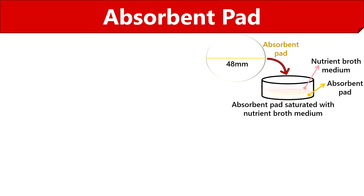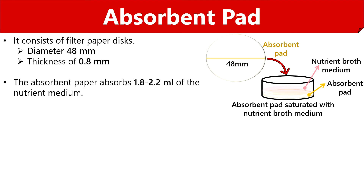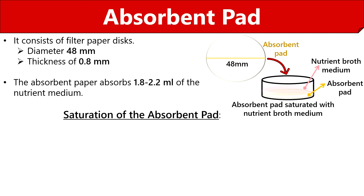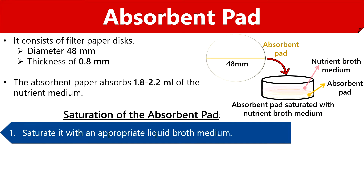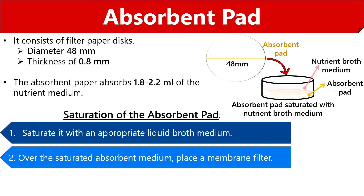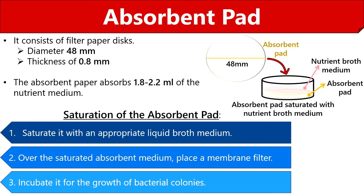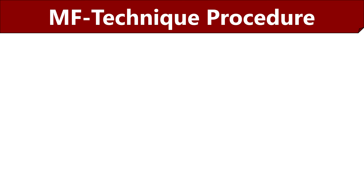After the separation of bacteria over the membrane filter, we need to prepare a special plate for which we need an absorbent paper. The absorbent paper is a filter paper disc having a diameter of 48 mm and a thickness of 0.8 mm, and it can absorb 1.8 to 2.2 ml of nutrient medium. To prepare the special plate, first we saturate the absorbent paper with an appropriate liquid or solid nutrient medium. Then we place the membrane filter containing viable bacterial cells over the saturated absorbent medium, and finally incubate the plate. The passage of nutrients through the filter during incubation allows the growth of bacterial colonies on the upper surface of the membrane filter.